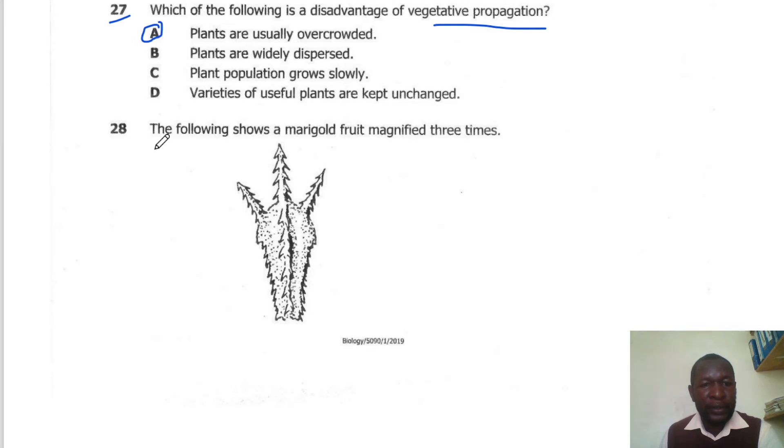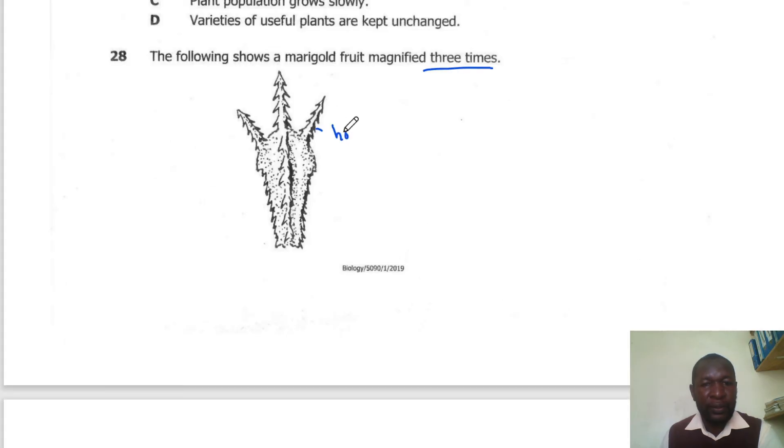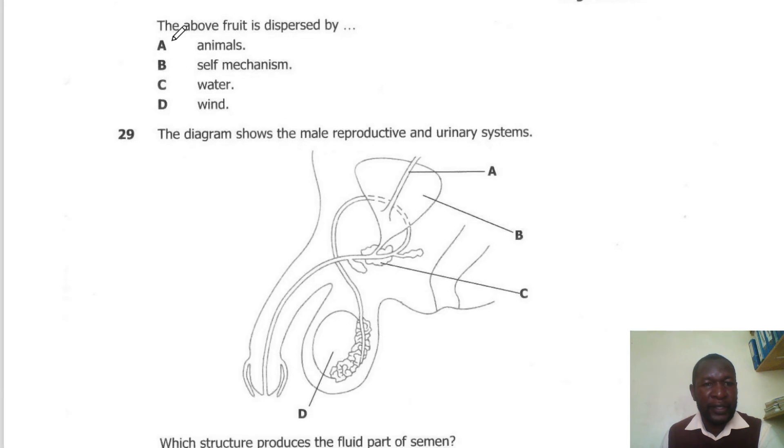Question 28. The following shows a merry goat fruit magnified three times. This fruit has hooks. The fruit is dispersed by animal dispersion because of the hooks. So the correct answer is A.